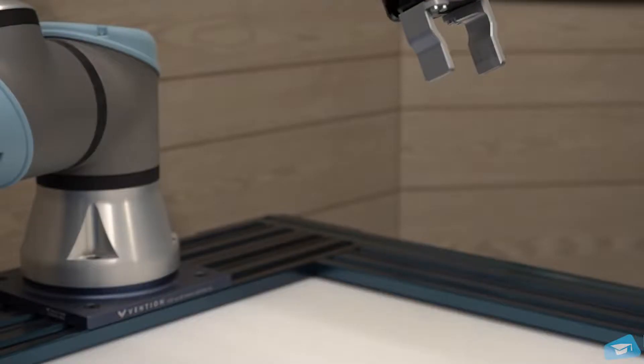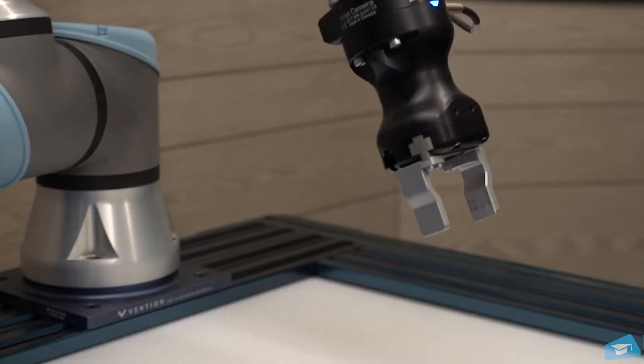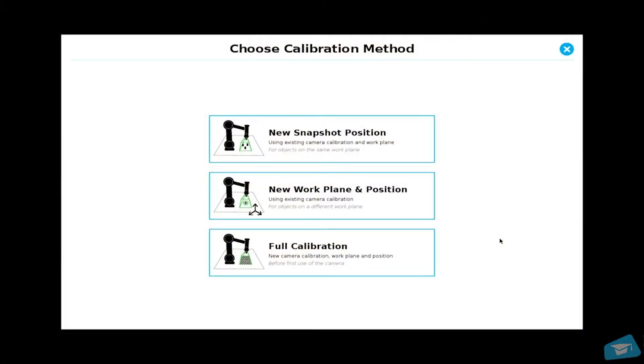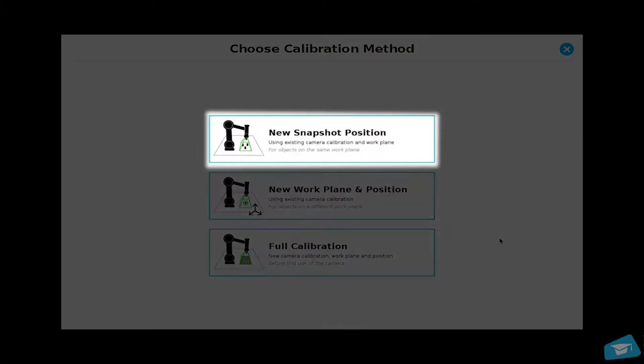If you have a smaller object or if you want to lower the camera to be more precise, use the new snapshot position calibration method. This is an easy way to have a new snapshot position based on an existing camera calibration.